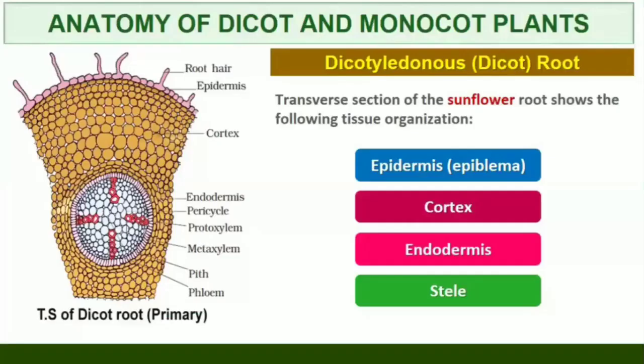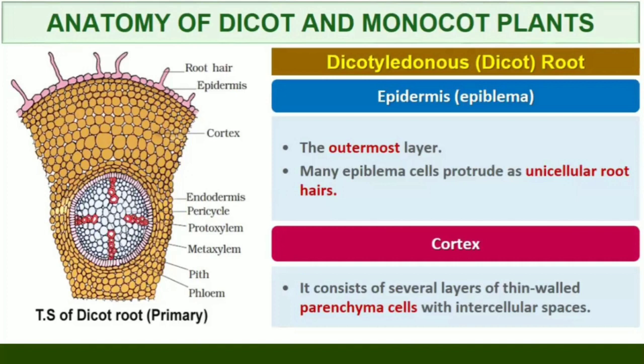6.3 Anatomy of Dicotyledonous and Monocotyledonous Plants. For a better understanding of tissue organization of roots, stems, and leaves, it is convenient to study the transverse sections of the mature zones of these organs. First, the Dicotyledonous Root. Let's see the transverse section of a sunflower root. The outermost layer is the epidermis. Many of the epidermal cells protrude in the form of unicellular root hairs.